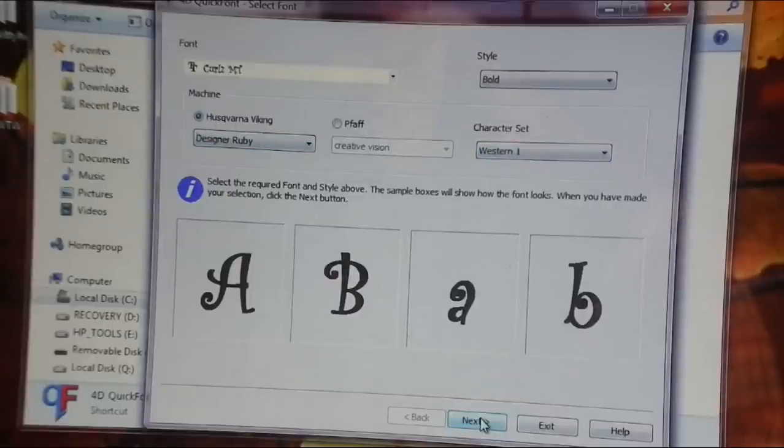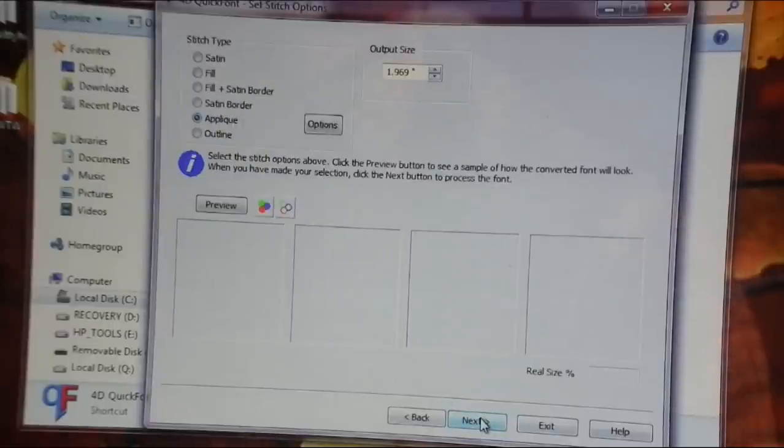And here's where you can click the stitch type if you just want a satin stitch or a fill stitch or fill and a satin border or a satin border. I have already selected appliqué right here, or you can do an outline and give yourself a raw edge appliqué, or you can even do appliqué with a raw edge if you wanted.